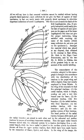Dorsum/dorsal: trailing edge or hind margin of the wing, extending from the base to the tornus. Dorsal alternatively also refers to the back, i.e. the upper part of the body, from above.